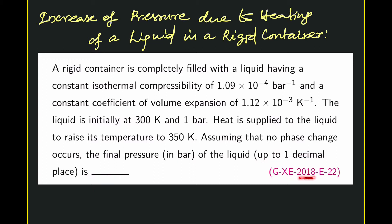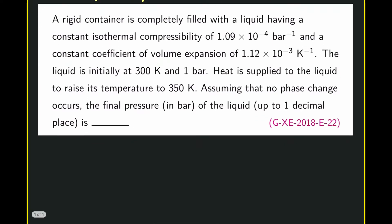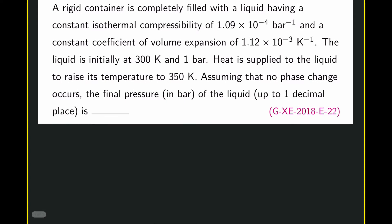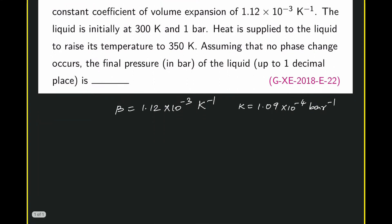Let us write available information. We are given β, κ, initial pressure, temperature, and final temperature. So β, which is the coefficient of volume expansion, is given as 1.12 × 10⁻³ K⁻¹. And the other data, which is κ, the isothermal compressibility, is equal to 1.09 × 10⁻⁴ bar⁻¹.